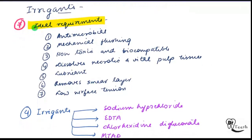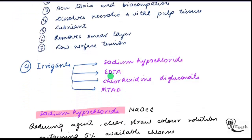Irrigants have 7 ideal requirements: antimicrobial, mechanical flushing, non-toxic and biocompatible, resolves necrotic and vital tissue, acts as a lubricant, removes the smear layer, and has low surface tension.